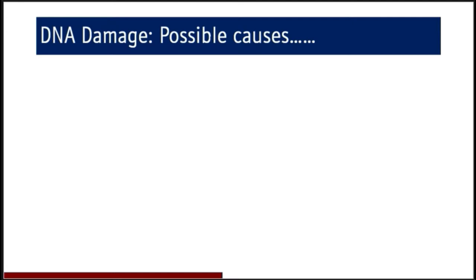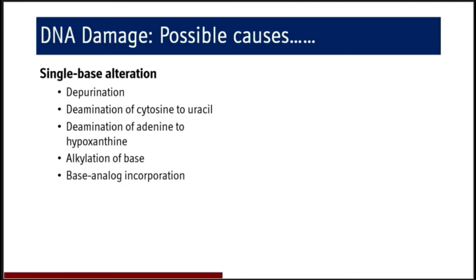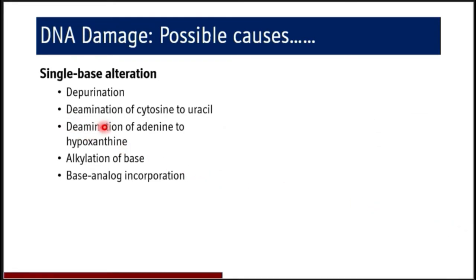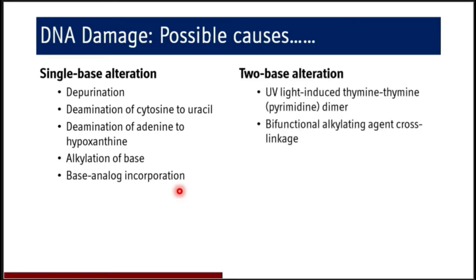What are the possible causes of DNA damage? It may be a single base alteration, where you find depurination, deamination of cytosine to uracil, deamination of adenine to hypoxanthine, alkylation of base, and base analog incorporation. Then there are two-base alterations also.